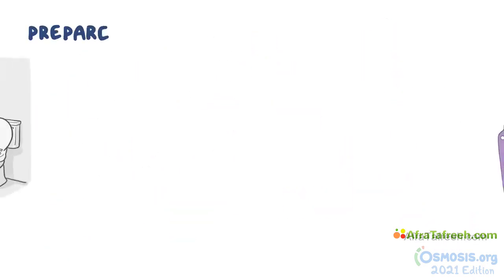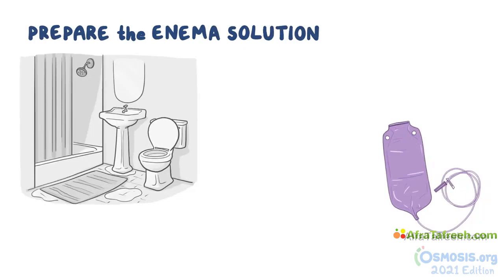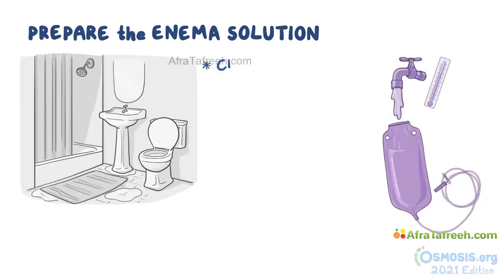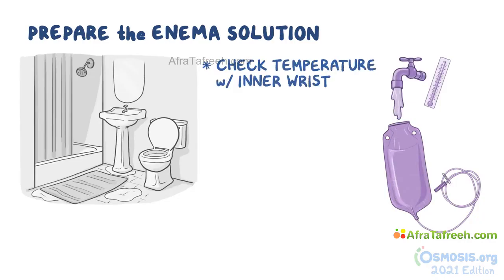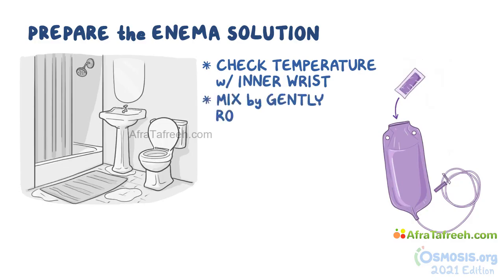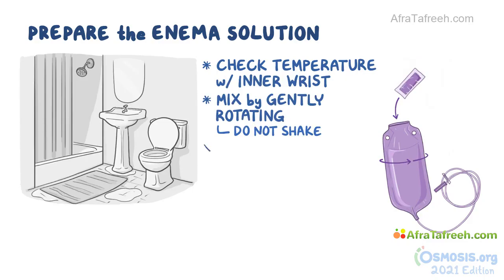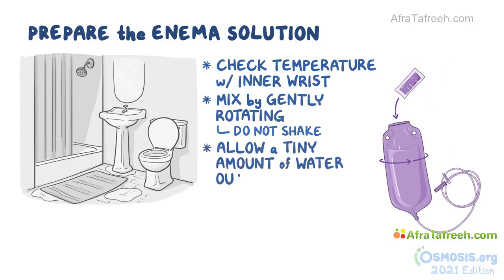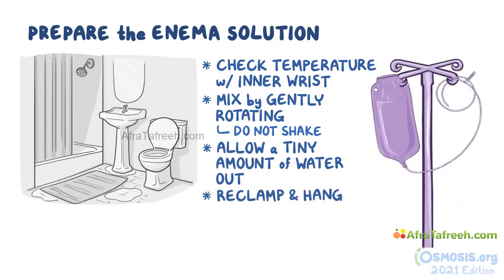The first step is to prepare the enema solution in the bathroom. Clamp the tubing and then fill the enema bag with warm water. Check the temperature with your inner wrist to make sure it'll be comfortable for the client. Add the Castile soap and mix by gently rotating the enema bag — do not shake the solution vigorously. Release the clamp on the tubing and allow a tiny amount of water out to remove all of the air from the tubing. Re-clamp the tubing and hang it from an IV pole.